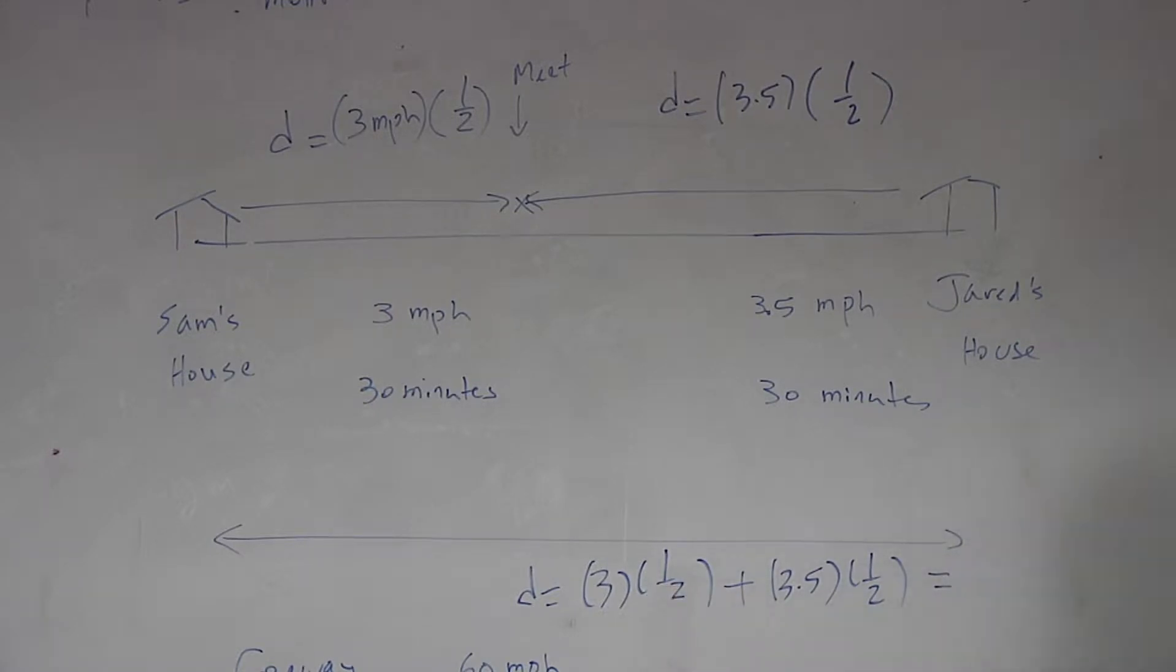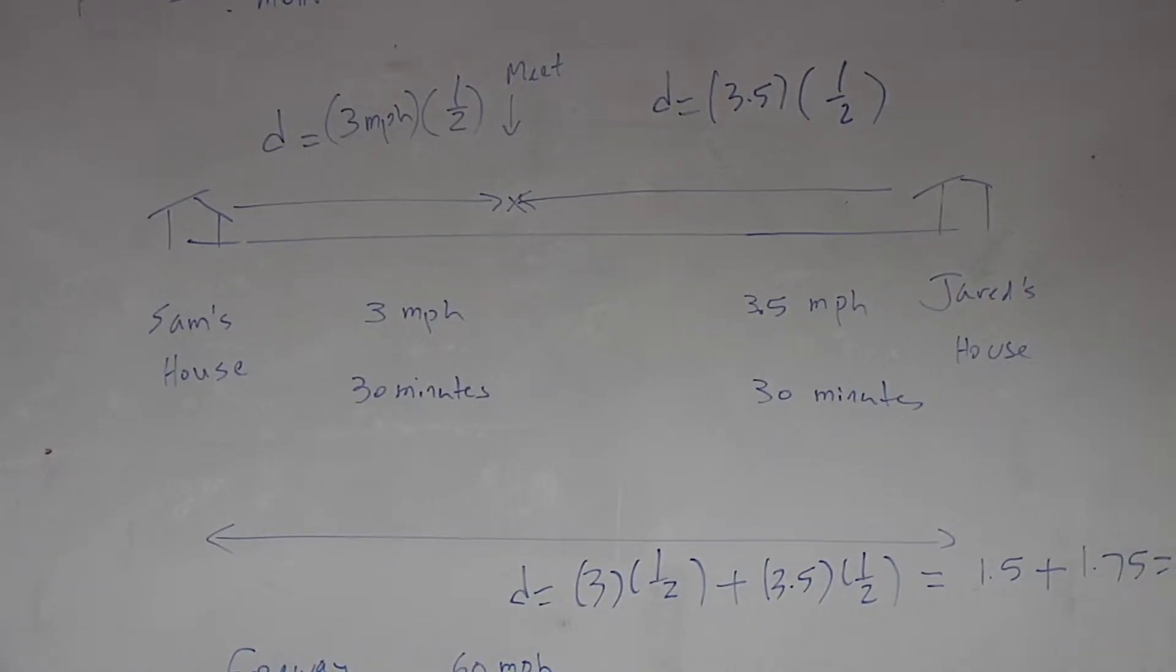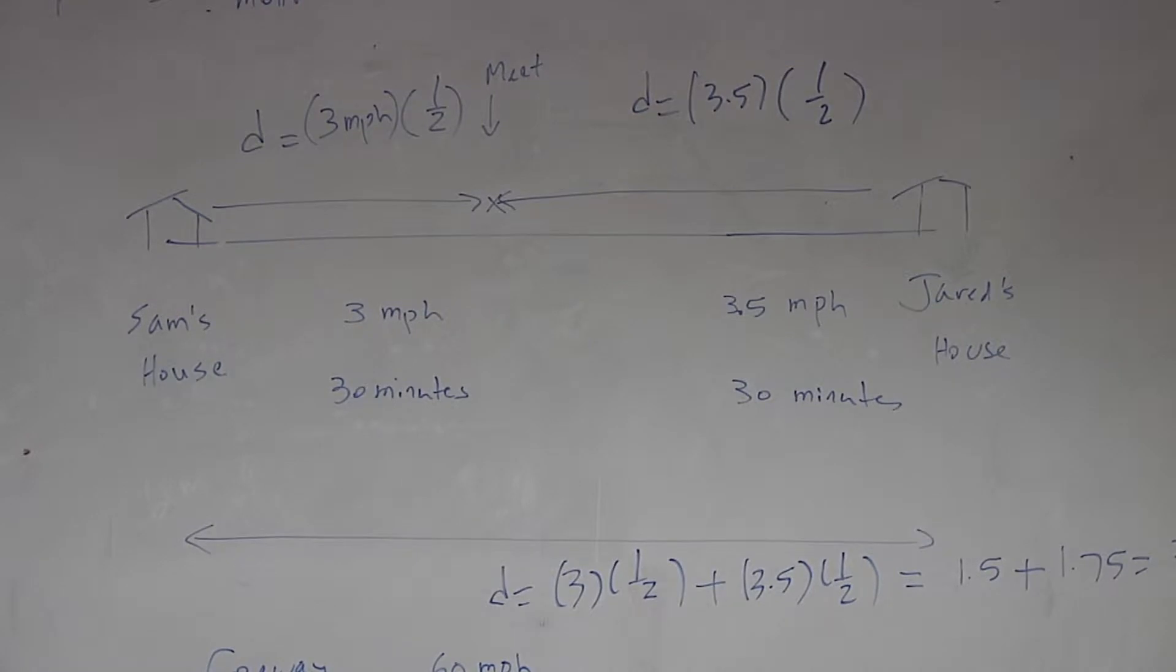And what is three times one half? That's one and a half miles plus three and a half times one half, and three and a half times one half is - let me back up - three times one half is equal to three over two which is equal to one and a half, and three and a half times one half is three and a half divided by two which is equal to 1.75. So when you add those two up you get 3.25 miles.